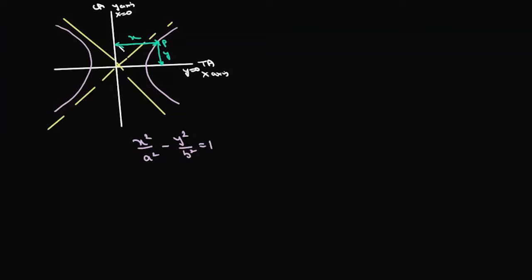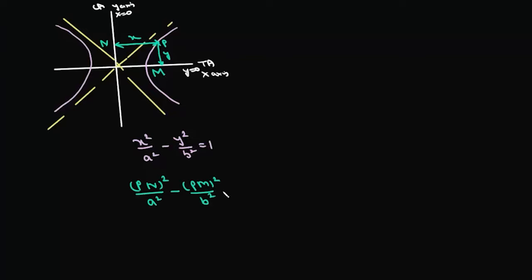If we call the distance from the conjugate axis Pn and the distance from the transverse axis Pm, then we can rewrite the hyperbola equation as Pn²/a² - Pm²/b² = 1.